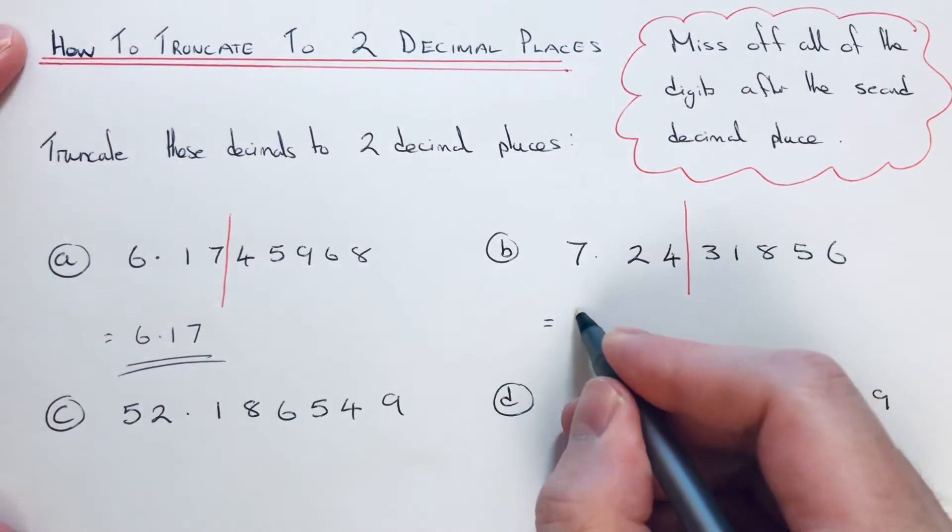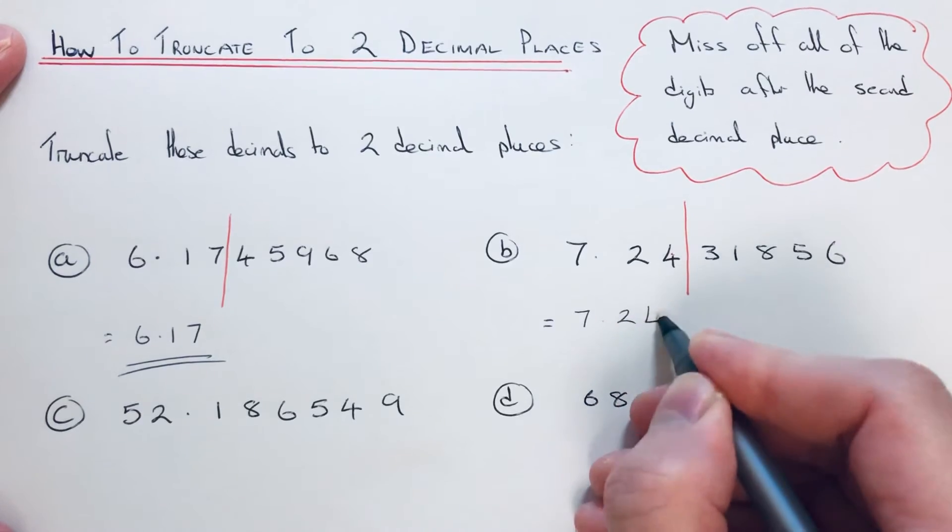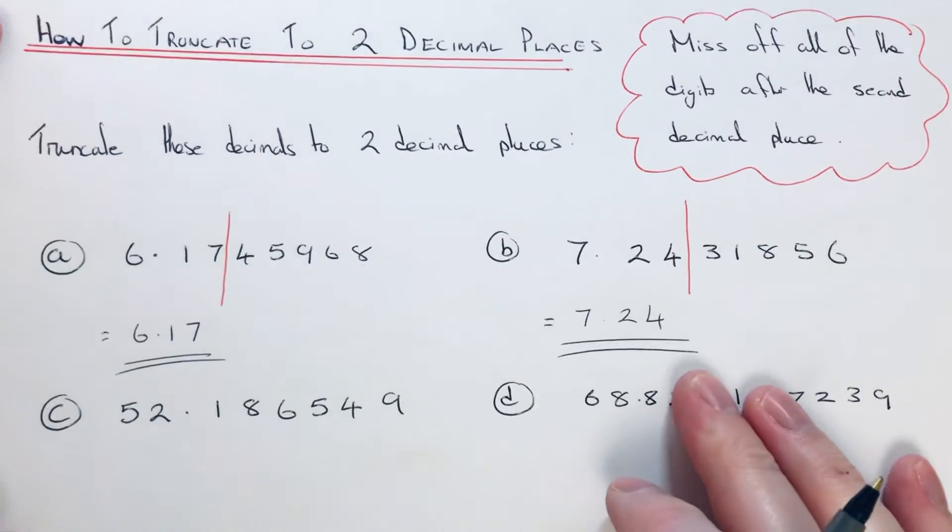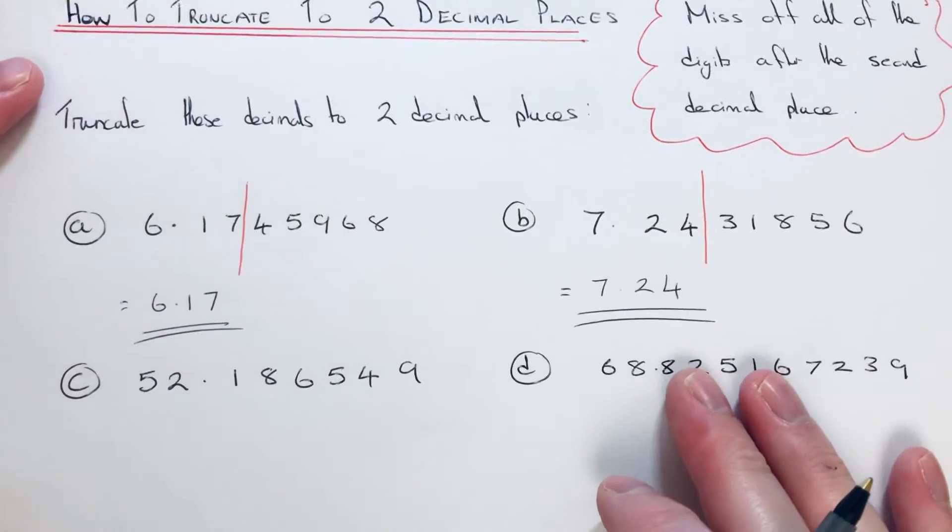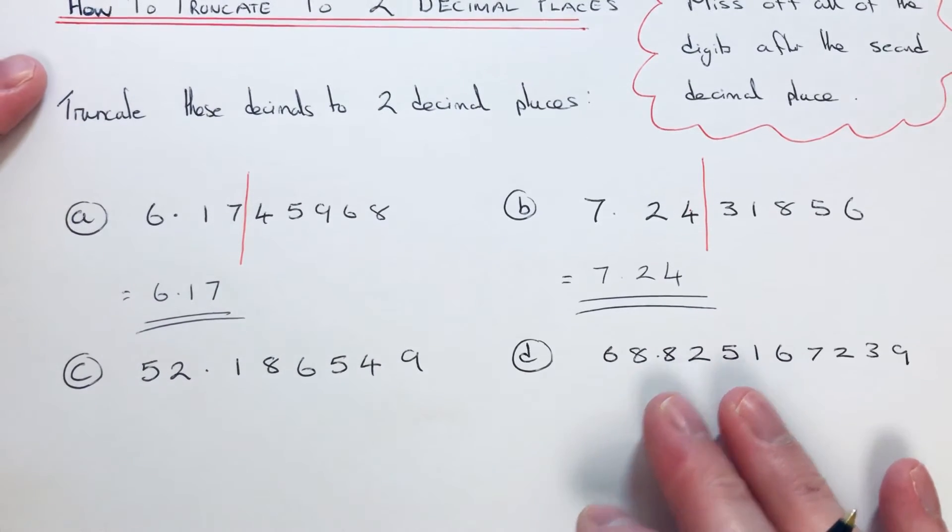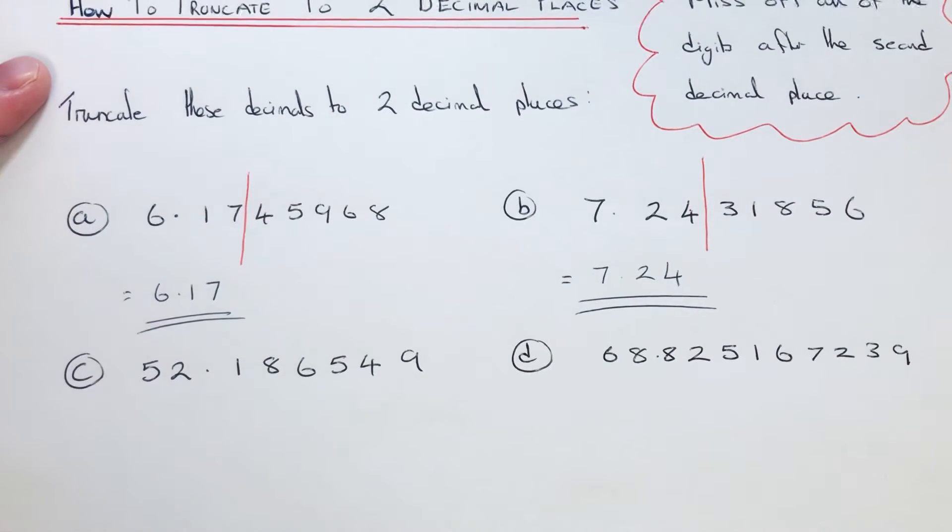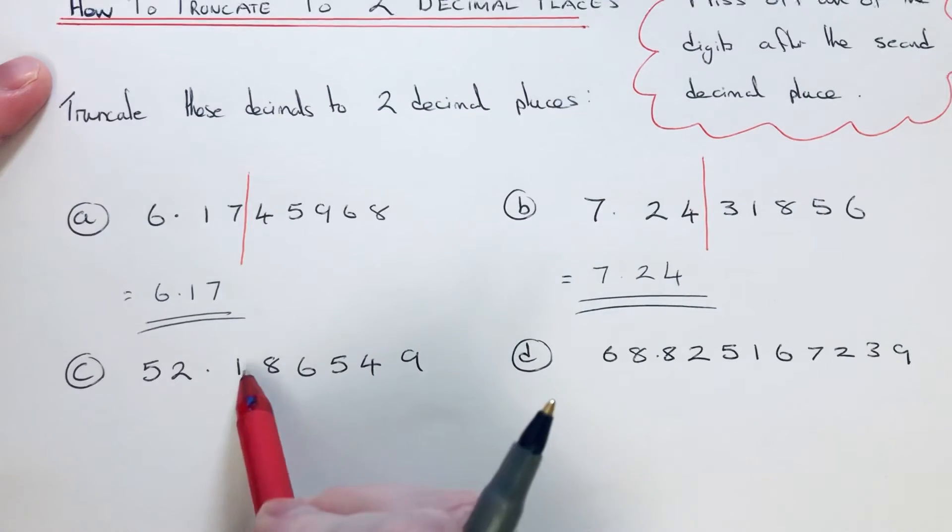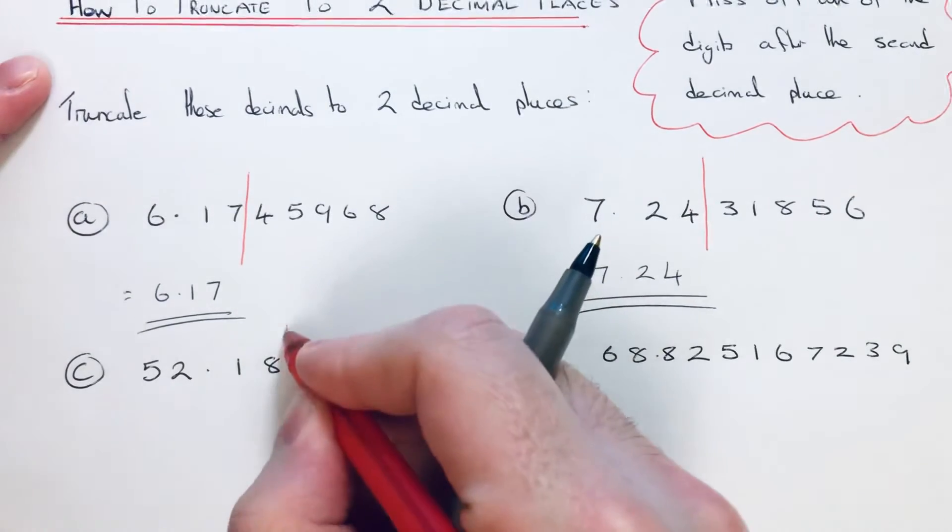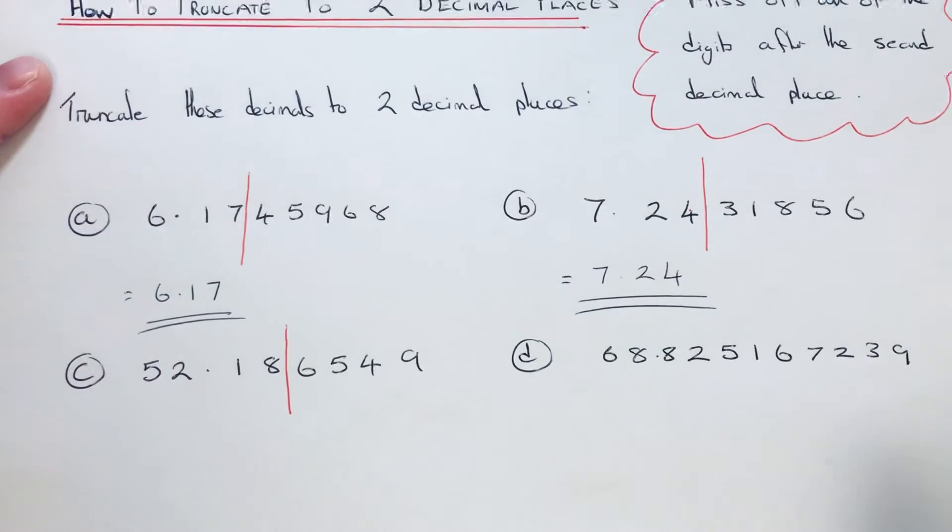Let's have a look at the third example. This time we've got 52.186549. Again, we're putting a line in two numbers after the decimal point. This is where we're cutting the number off.